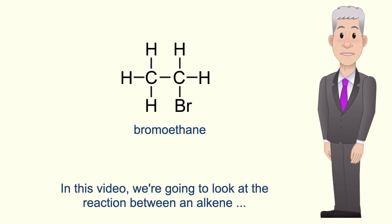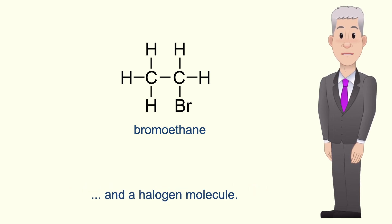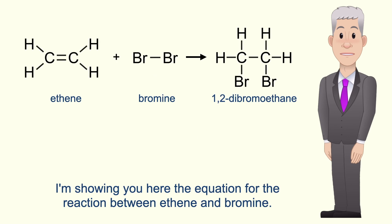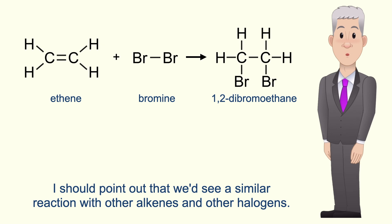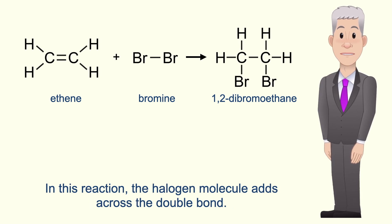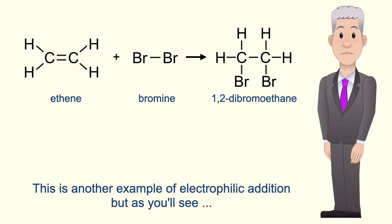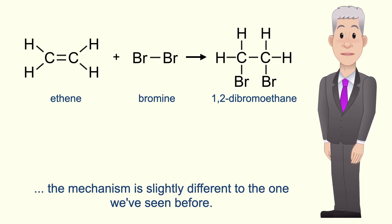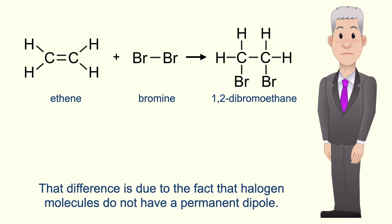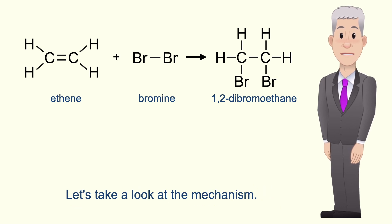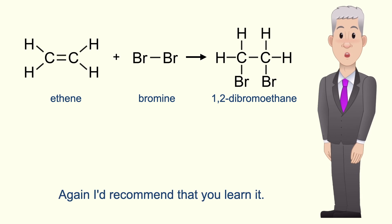In this video we're going to look at the reaction between an alkene and a halogen molecule. Here is the equation for the reaction between ethene and bromine, but a similar reaction occurs with other alkenes and other halogens. In this reaction the halogen molecule adds across the double bond. This is another example of electrophilic addition, but the mechanism is slightly different because halogen molecules do not have a permanent dipole. Let's take a look at the mechanism — I'd recommend that you learn it.